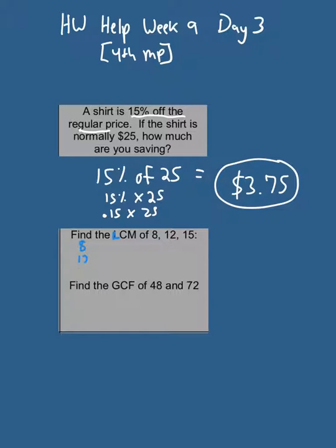Remember that L helps you remember list multiples of 8, 12, and 15 until you find the first one they have in common. So I'm going to start with some multiples of 15. I'll do 15, 30, 45, 60, 75, 90, 105.